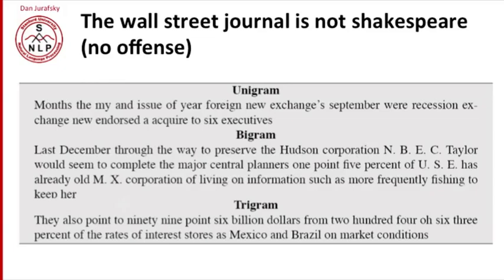And we can see that if we look at a different corpus like the Wall Street Journal, it's not Shakespeare. So for example, here's some trigram sentences from the Wall Street Journal: They also point to 99.6 billion dollars from 2003, percent of the rates of interest stores as Mexico and Brazil on market conditions. That sounds like the Wall Street Journal. But here's two corpora of English, both reasonable size corpora, millions of words, or at least a million words. No overlap at all in the Shakespeare sentences and the Wall Street Journal sentences.